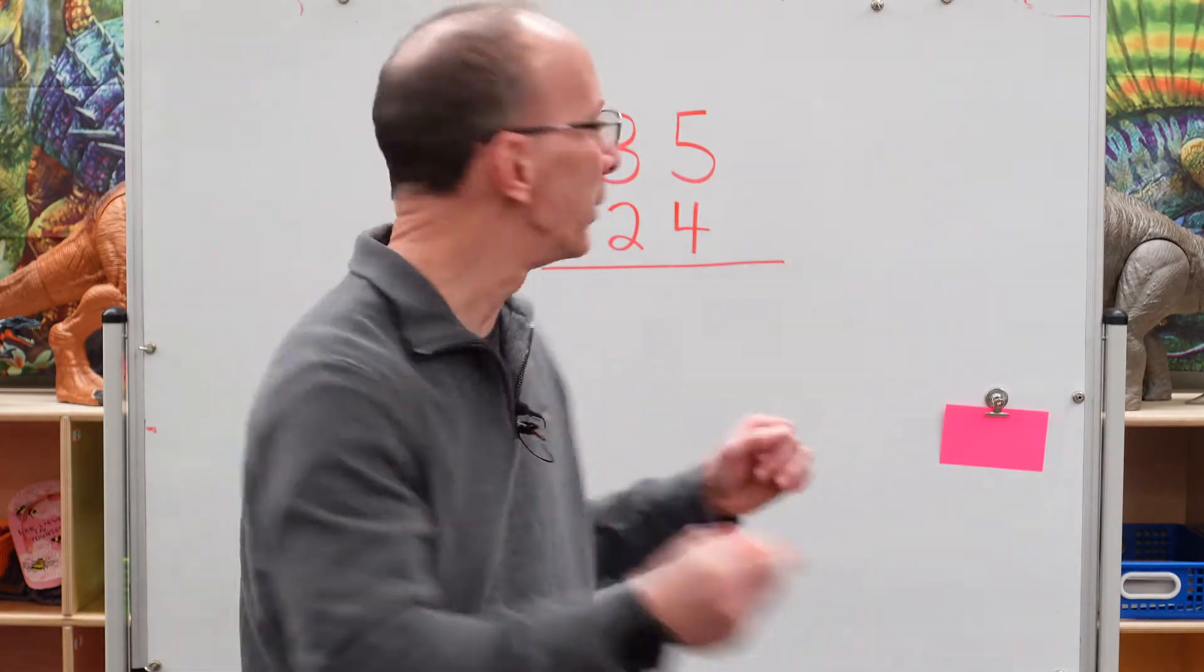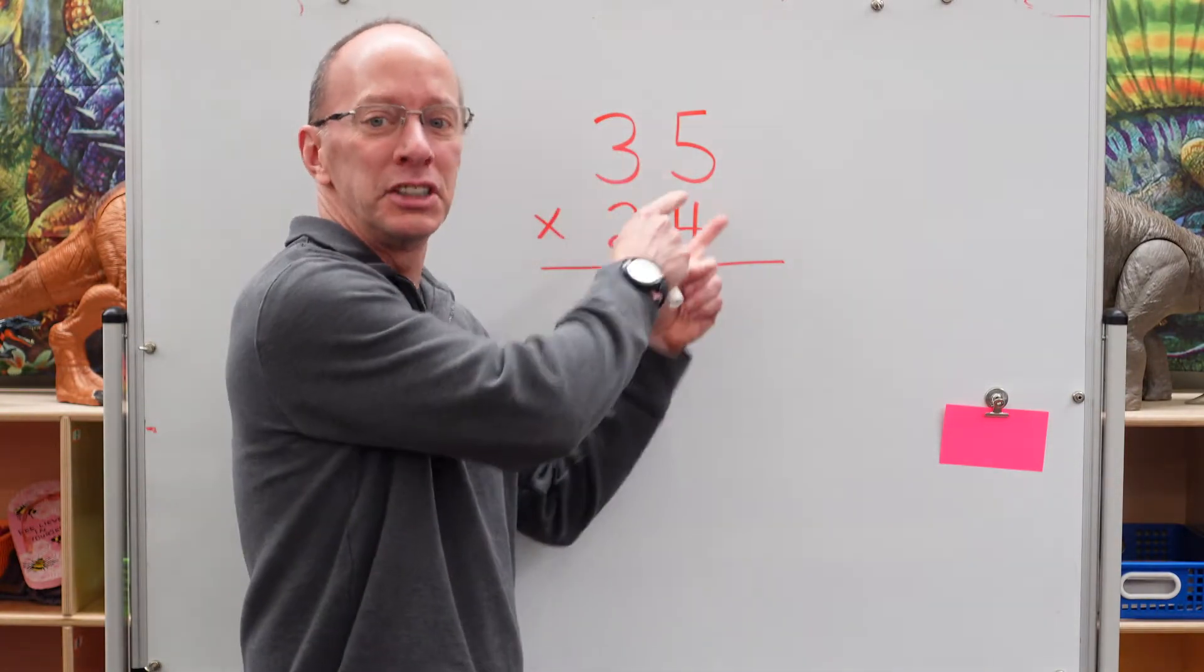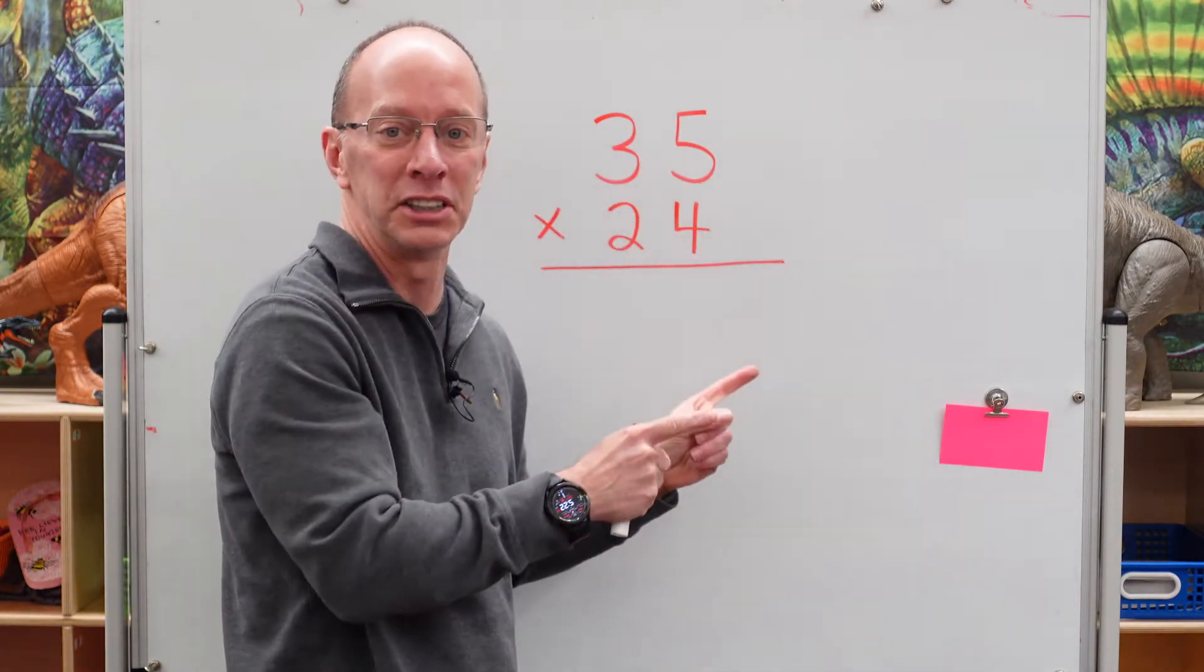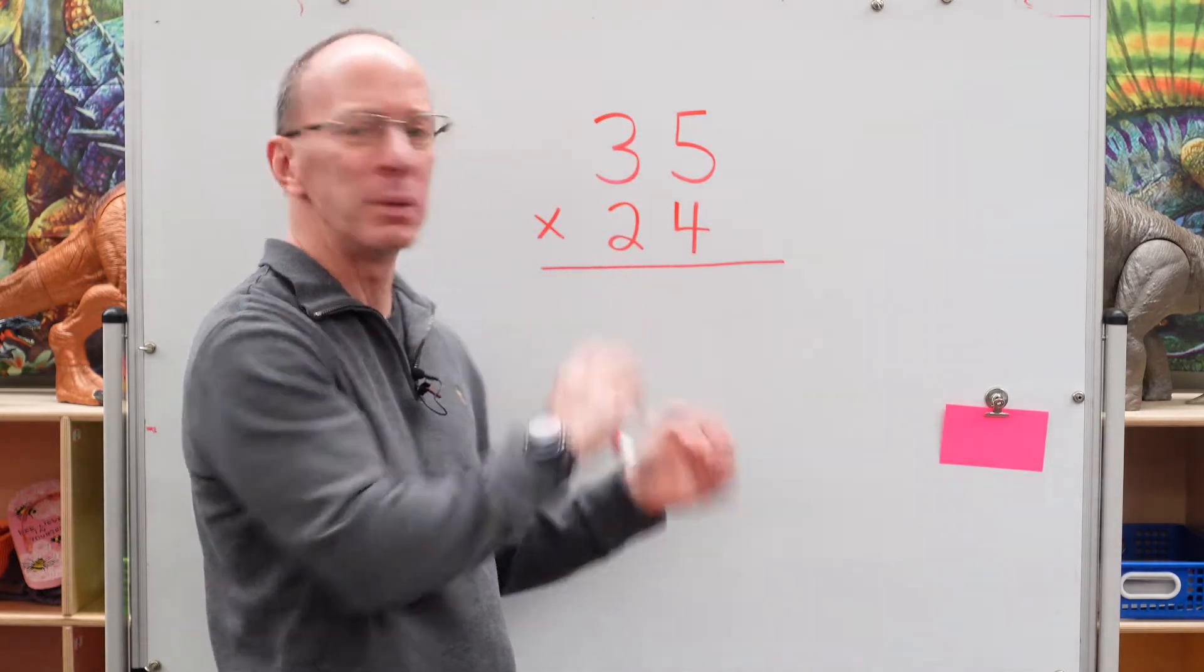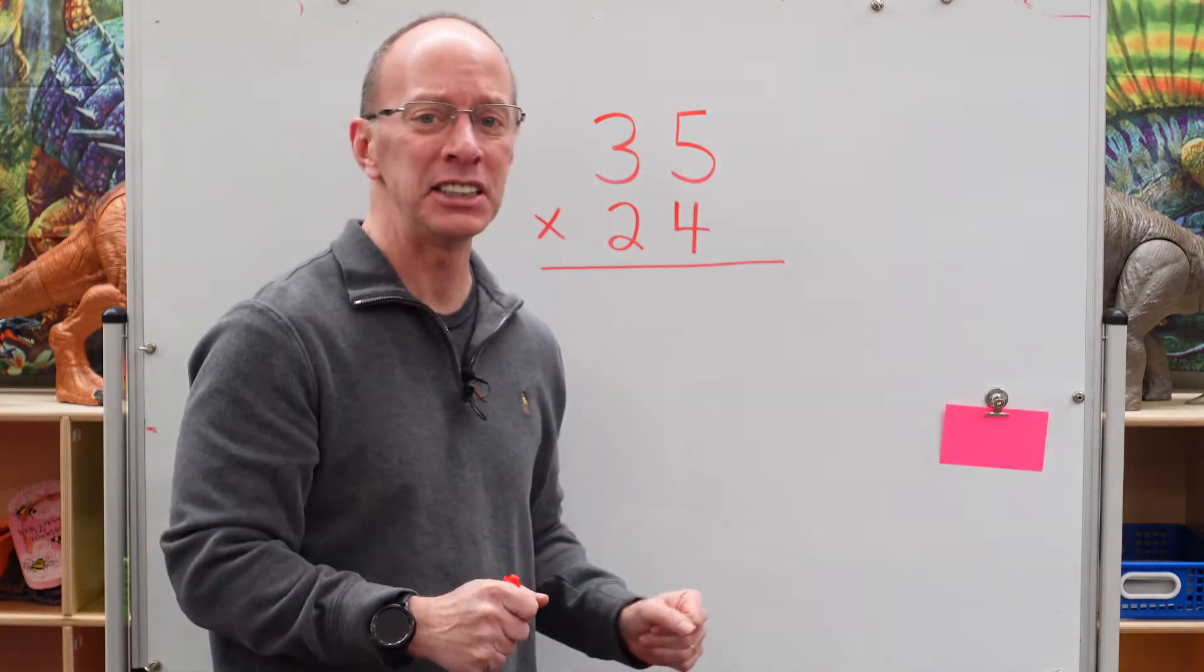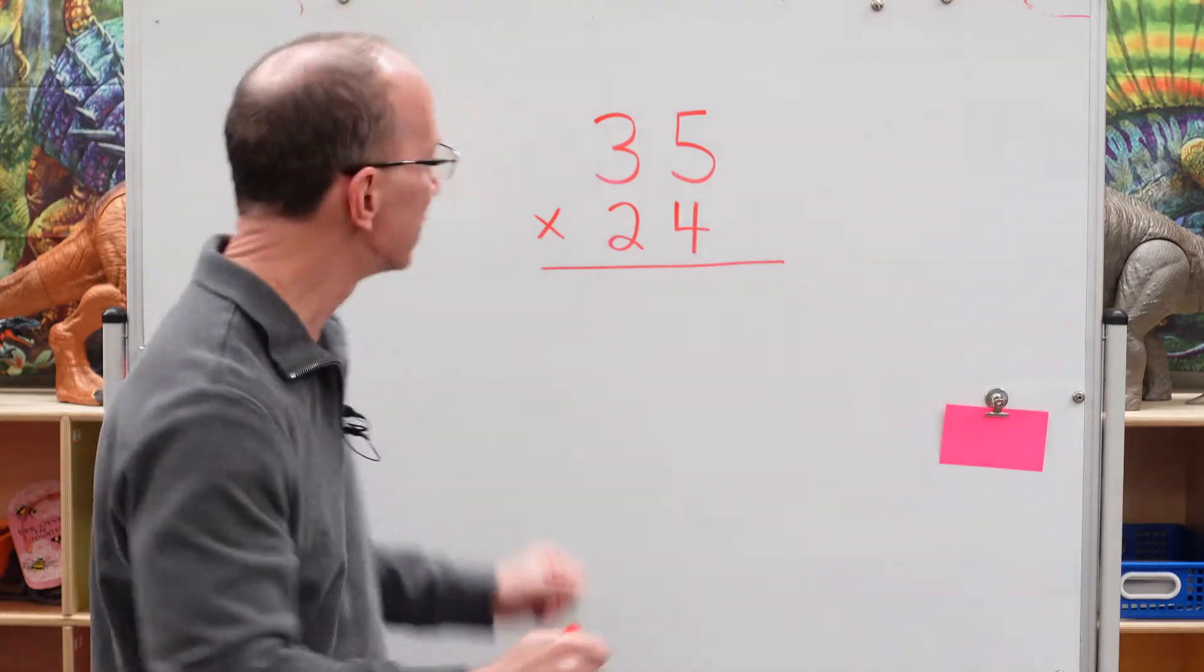Hey, welcome back to the show. Today we are going to multiply a two-digit number by another two-digit number. It looks a little difficult, but don't worry. We're going to take it easy-cheesy lemon-squeezy. All right, let's take a look at it.